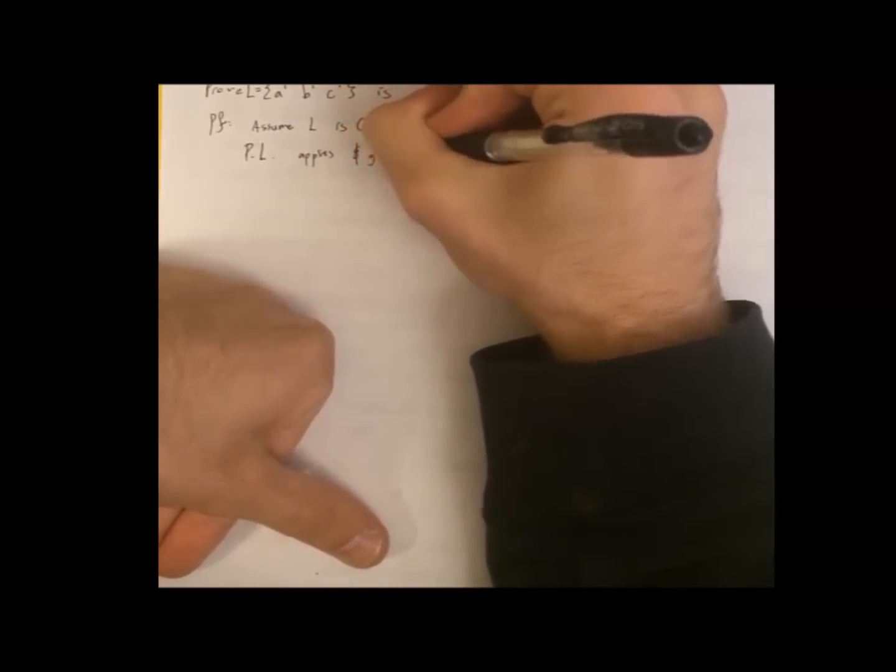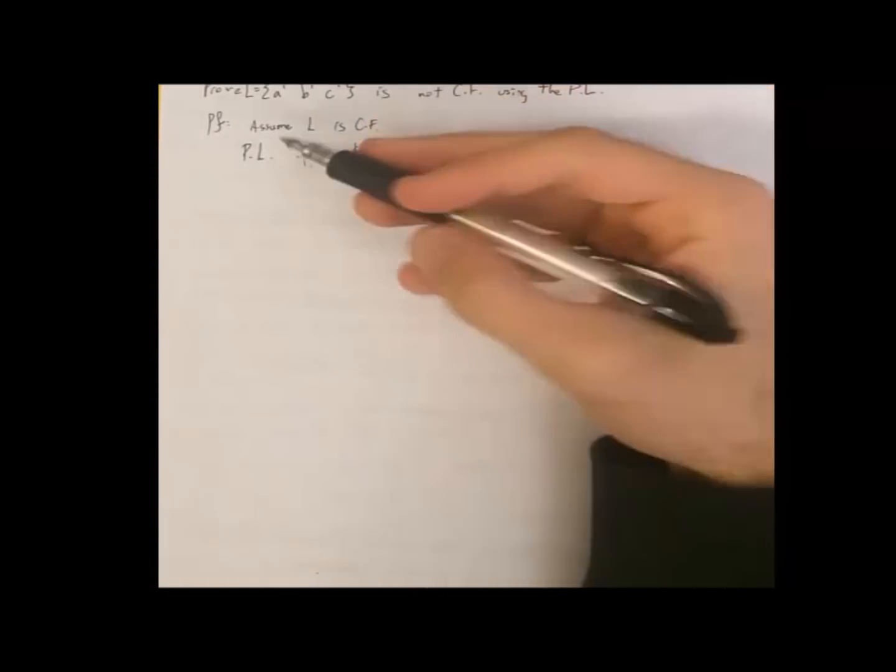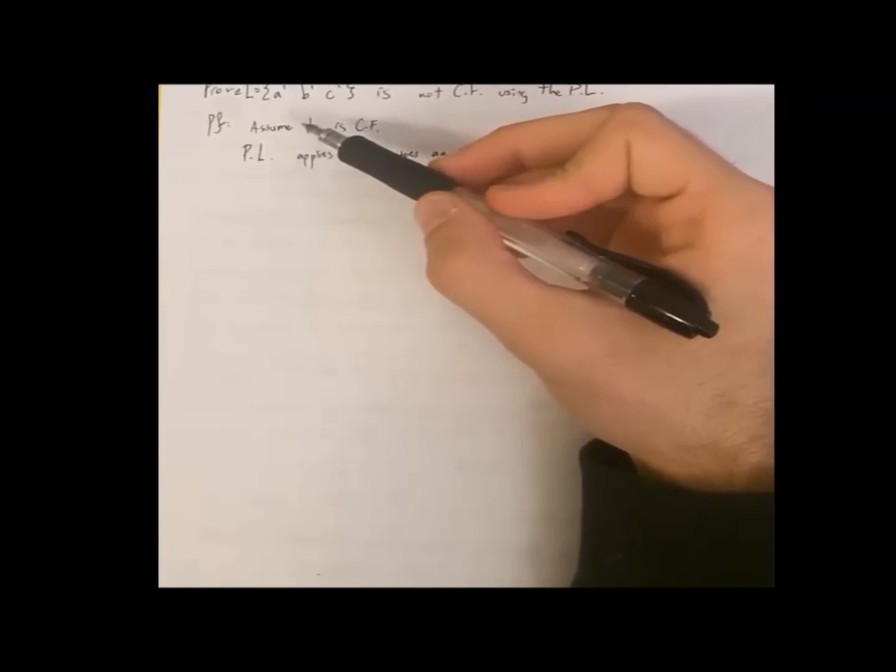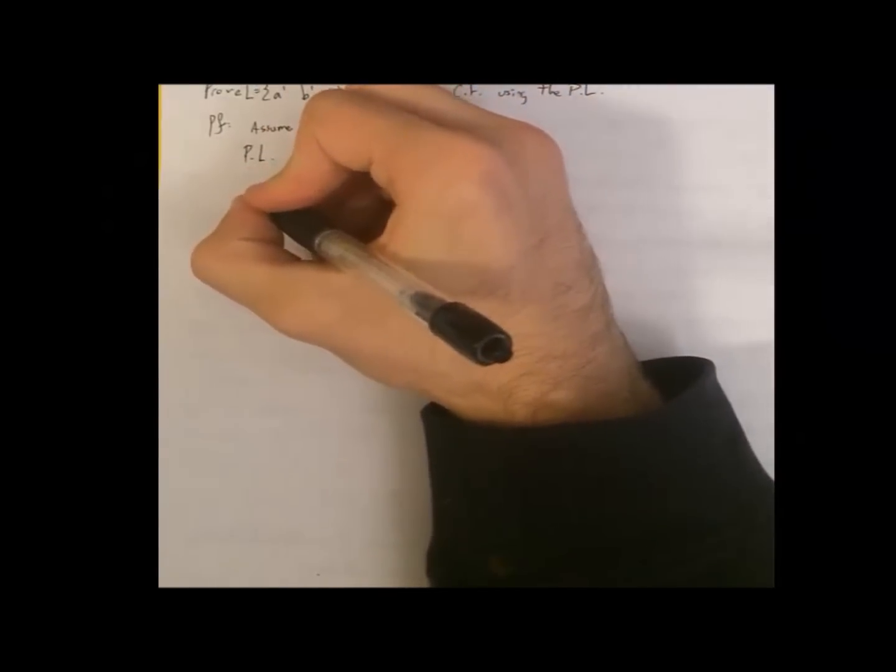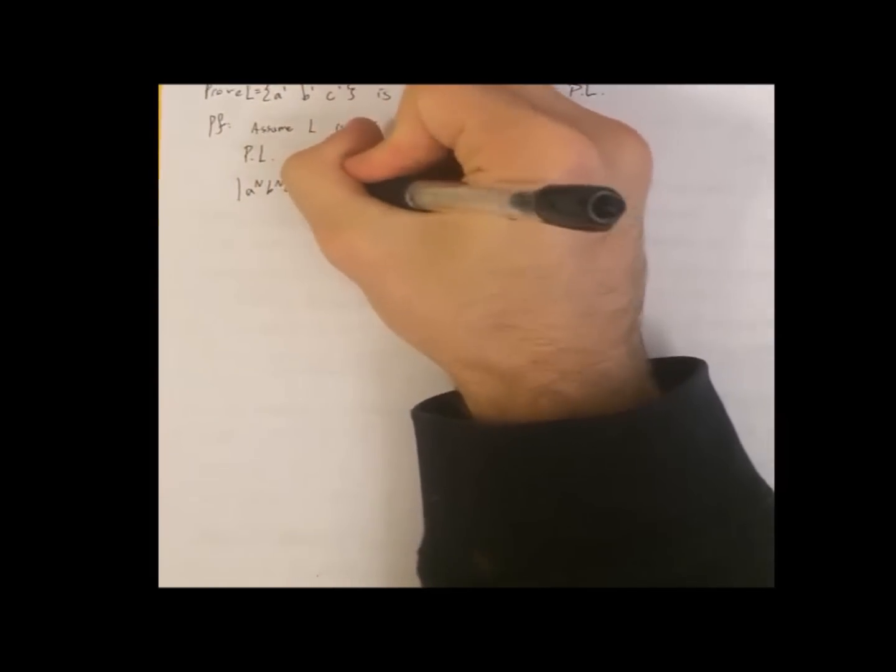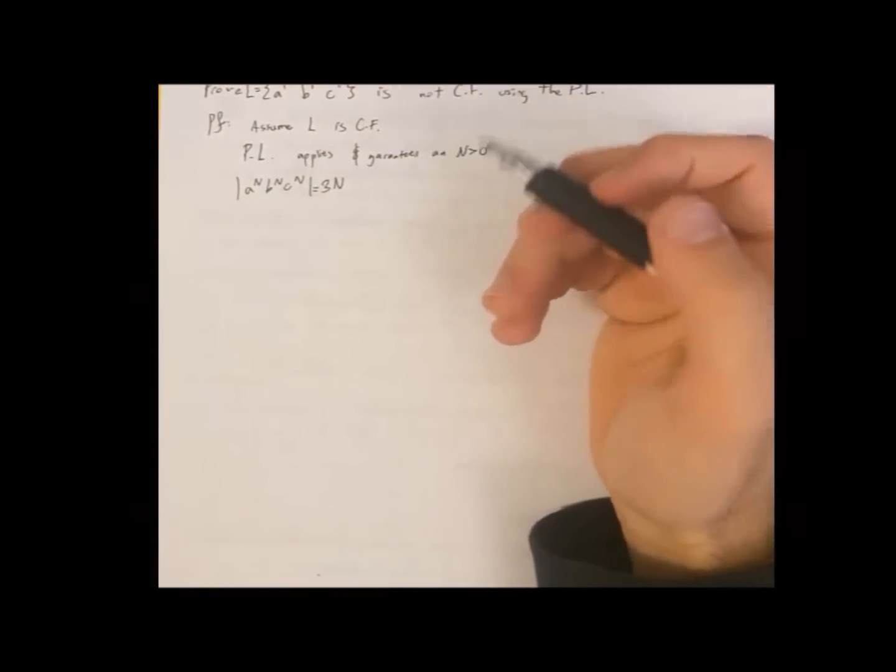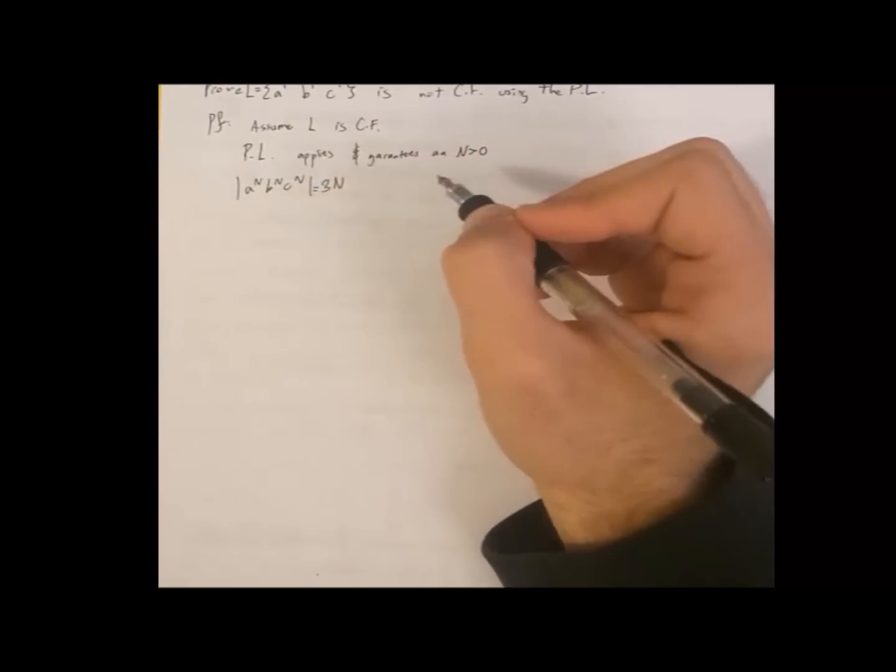And it also guarantees an n greater than zero. So the next step, we pick a word in L that is of the format, it's in the language, and it's longer than n. What do we know is longer than n? Well, we know a^n b^n c^n is 3n. Because it's n a's, n b's, n c's. It's 3n's. 3n is greater than n. So this is in the language, this is longer than n.